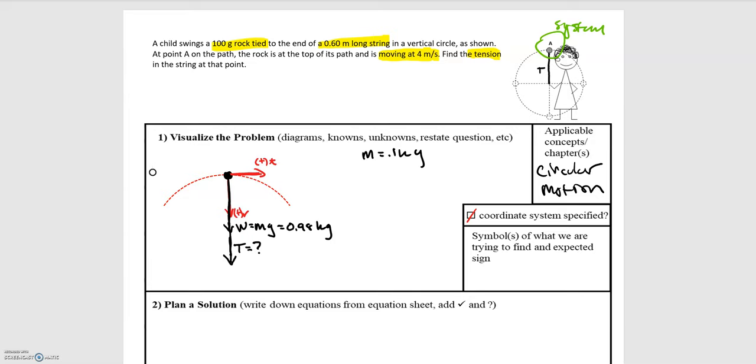I'm just going to label a couple more things. We're told that the length of the string is equal to 0.6 meters, and then we're also told at this point up at the top, the rock has a velocity of 4 meters per second. So now we've determined all the given information in the problem.